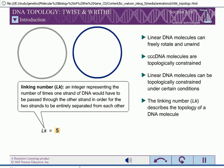The linking number is always an integer. The linking number is an invariant topological property of CCC DNA. No matter how much a CCC DNA molecule is distorted, the linking number remains constant. The linking number is the sum of two geometric components called twist and writhe.